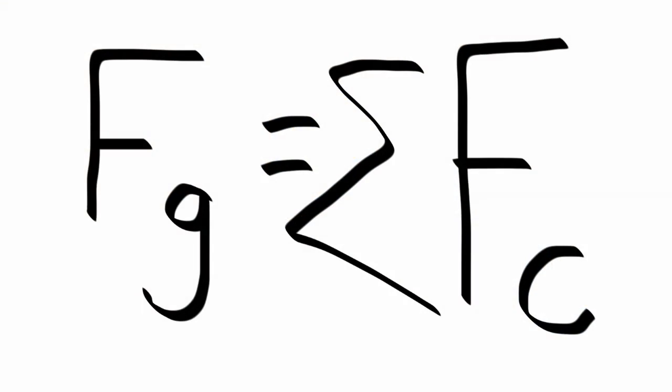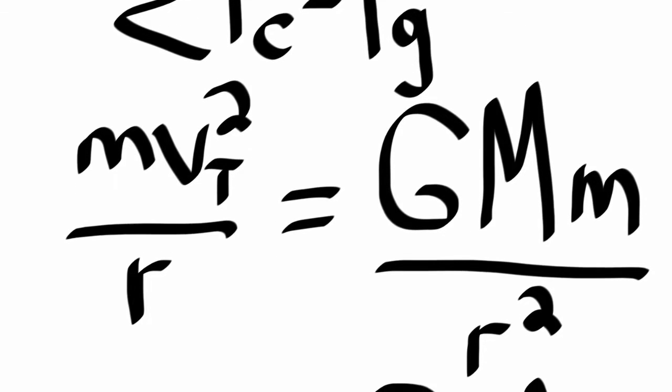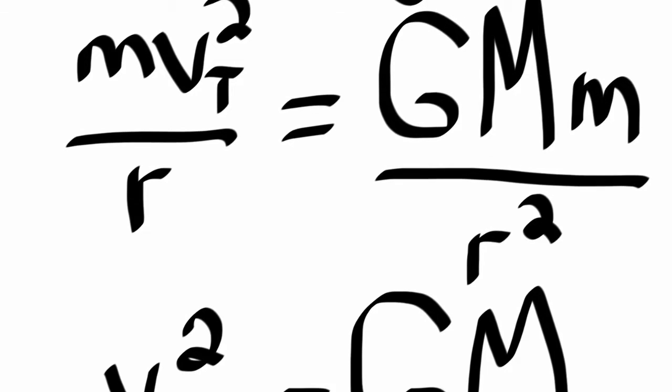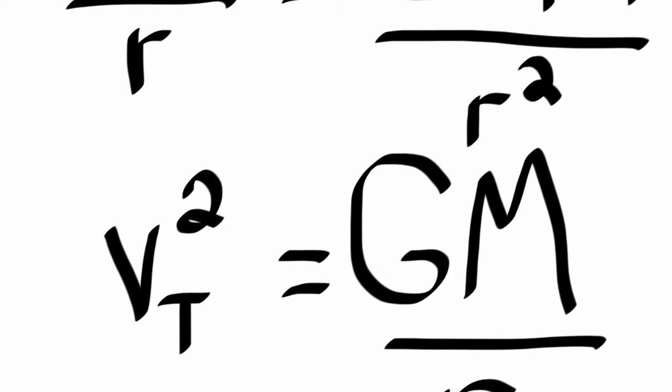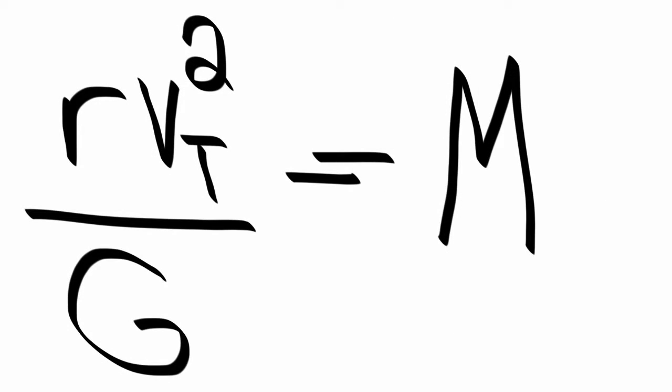Gravitational force is the centripetal force that keeps it in orbit. So set the two equations equal to each other. Little mass cancels out, one of the radii cancels out, and you get the equation: the mass of the planet is the radius of the satellite orbit times the tangential speed squared of the satellite orbit divided by that special gravitational constant discovered by Cavendish.